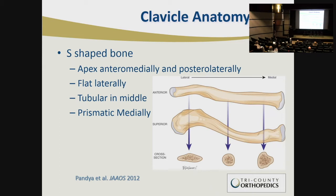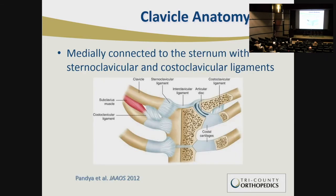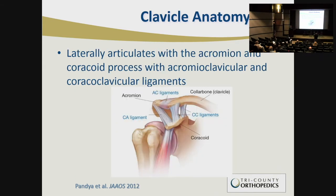The clavicle is an interestingly shaped bone — it's an S-shaped bone with its apex anterior medially and another apex posterior laterally, as you can see in this diagram. It's very flat laterally, which has implications for fixation, tubular in the middle with implications for intramedullary fixation, and prismatic medially. There are many muscles attaching to the clavicle — the trapezius, the deltoid, and the neck strap muscles — all affecting displacement. Medially it connects to the sternum via the sternoclavicular and costoclavicular ligaments, and laterally it articulates with the acromion and coracoid process, stabilized by the acromioclavicular and coracoclavicular ligaments.